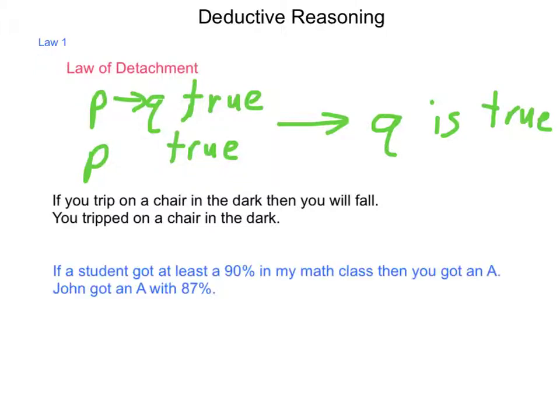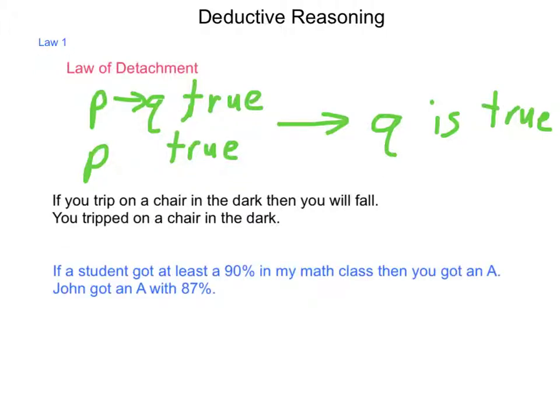Let's take a look at another one. If a student got at least a 90% in my math class, then the student got an A. John got an A with 87%. Because the conclusion was reached, John got an A, but the precursor, the hypothesis, was not met...